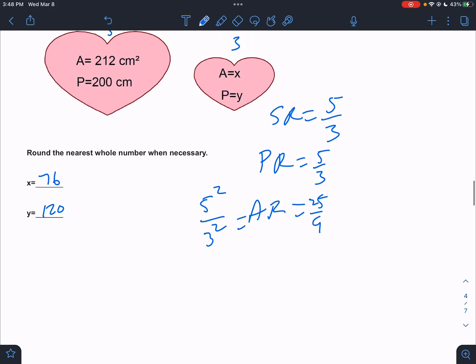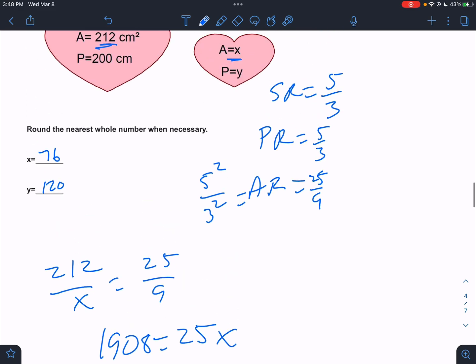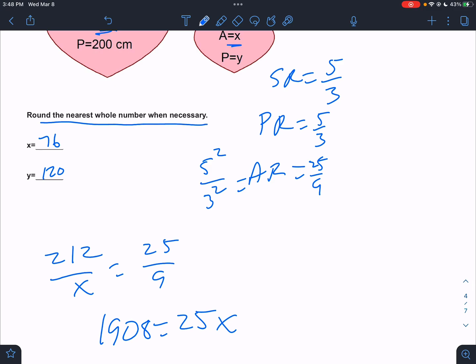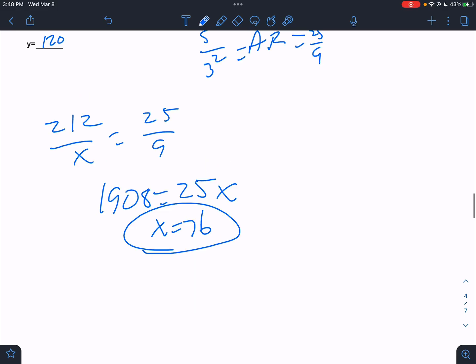So to work with area, the first one, it would be 212 over X. That's the ratio of the areas equals – the ratio has to be 25 over 9. So we would cross multiply and solve. I'm going to use my calculator on that. That would be 212 times 9, and I get 1908 equals 25X. So divide that by 25, and I get 76.32. It says round to the nearest whole number, so that would come out to 76 if it's the nearest whole number.